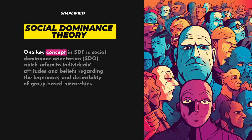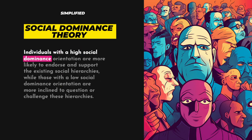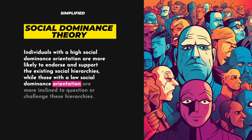One key concept in SDT is Social Dominance Orientation, which refers to individuals' attitudes and beliefs regarding the legitimacy and desirability of group-based hierarchies. Individuals with a high social dominance orientation are more likely to endorse and support the existing social hierarchies, while those with a low social dominance orientation are more inclined to question or challenge these hierarchies.